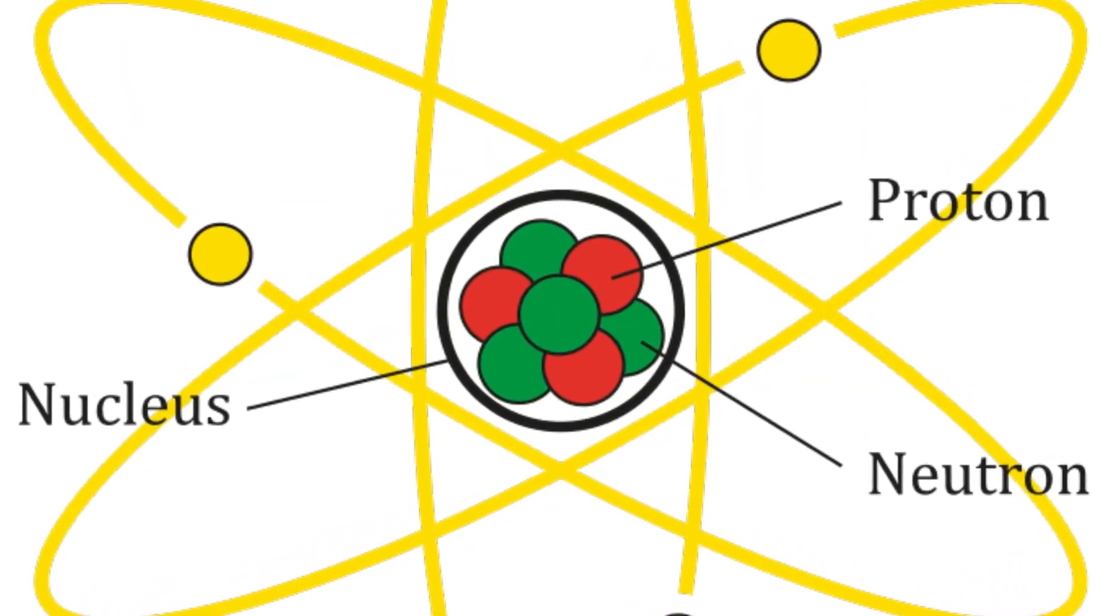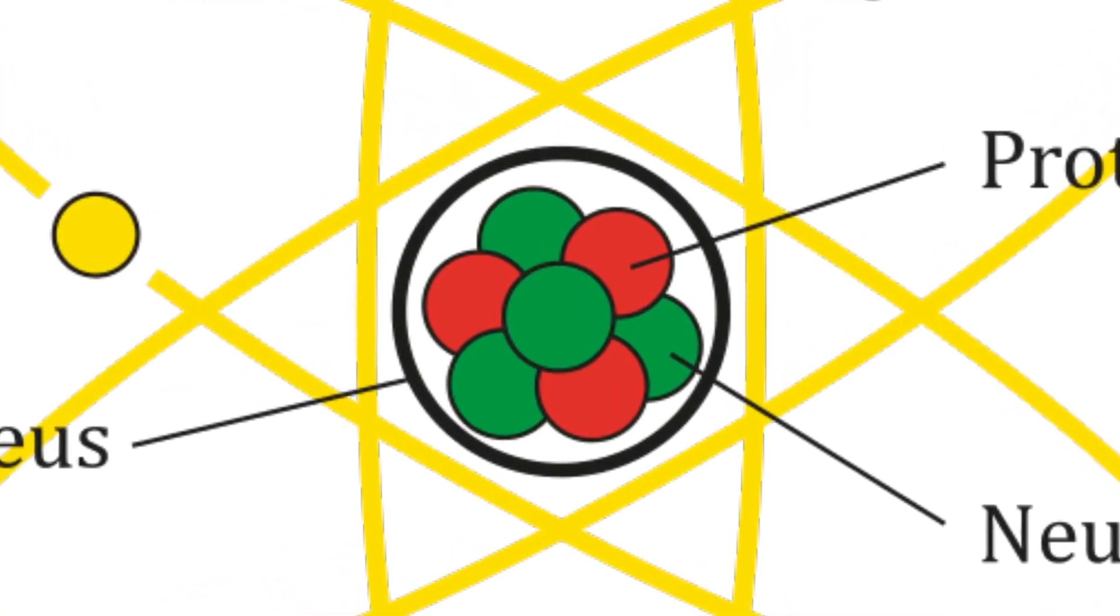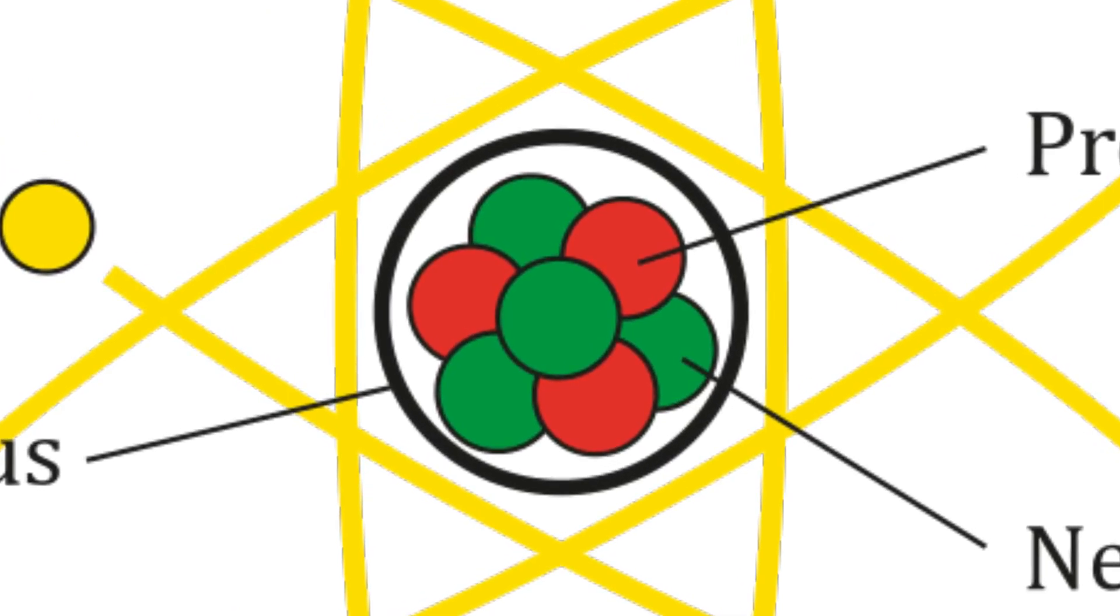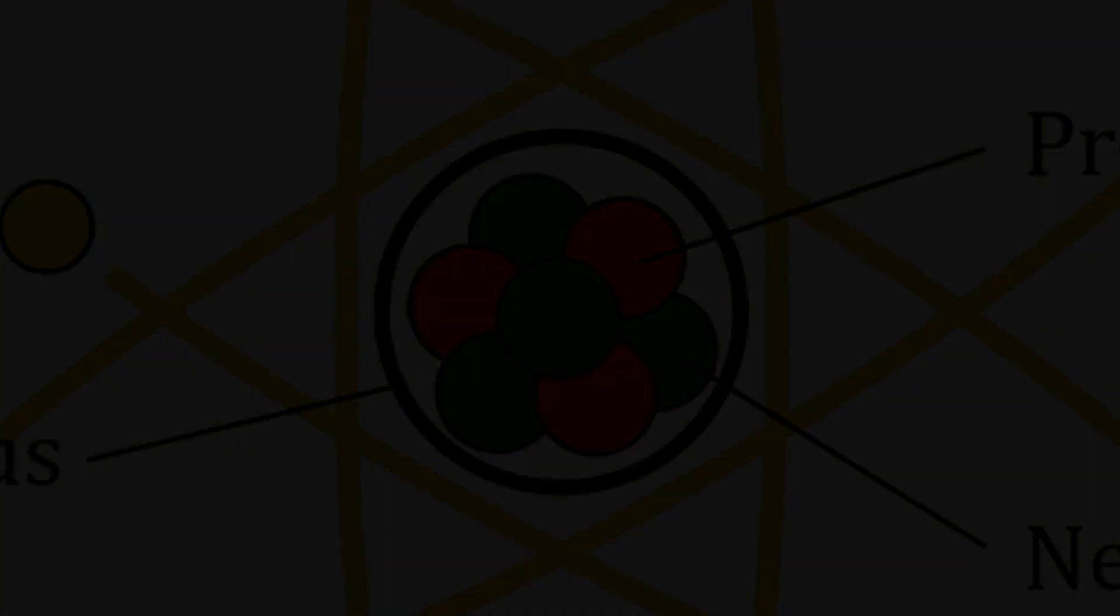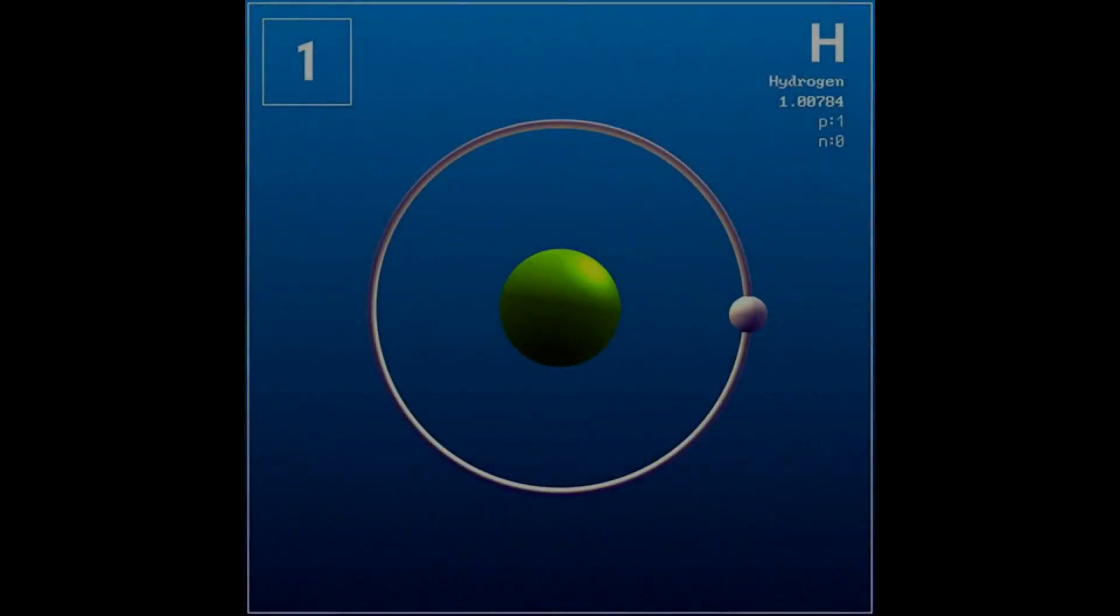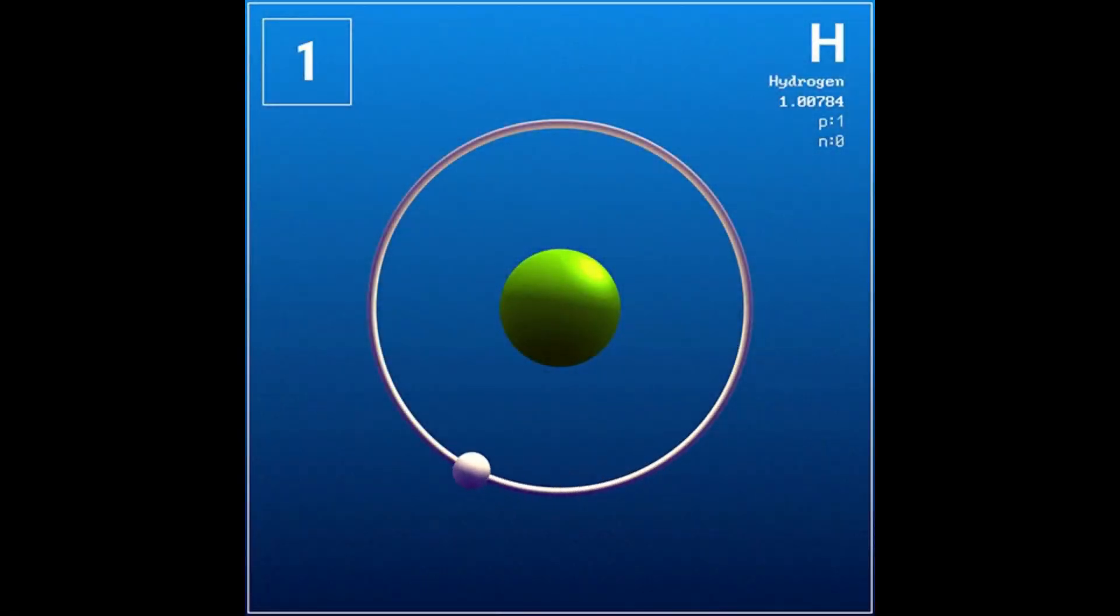A larger alpha sub s makes fusion easier and fission harder. With a smaller alpha sub s, the reverse happens. We are lucky alpha sub s is much larger than alpha. If it weren't, the strong force wouldn't be able to overcome the electrostatic repulsion of protons, and nuclei of atoms wouldn't stay together at all. In such a universe, the only possible atom is hydrogen. Accordingly, if the strong force weren't so strong, we wouldn't be here.